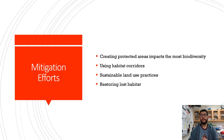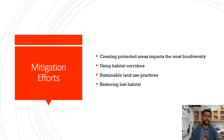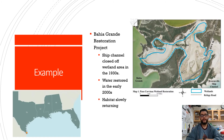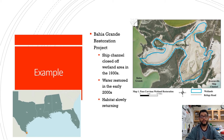How can we fix these problems? With mitigation — we create protected areas, use habitat corridors to connect spaces that have been broken up, use sustainable land use practices so that soil erosion doesn't occur, and restore previous habitats. One example is the Bahia Grande, close to the Rio Grande Valley in south Texas. It was cut off from the ocean by a ship channel in the 1930s and became dry, almost desert-like. In the early 2000s, they reconnected the water, the area filled up, and the habitat has slowly returned — it's now a wildlife refuge again, with species returning over the last 20 years. That's a great example of how to mitigate and restore previous areas.